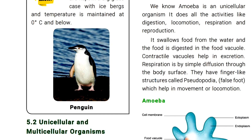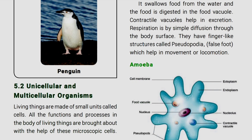Amoeba has a finger-like structure called pseudopodium, which is also called a false foot. This pseudopodium helps in movement or locomotion. This is the structure of Amoeba.